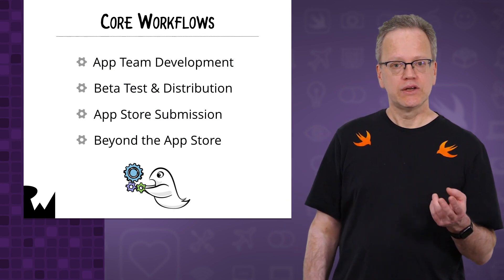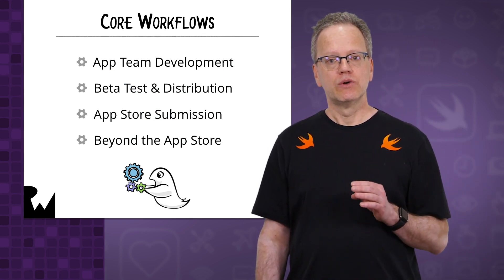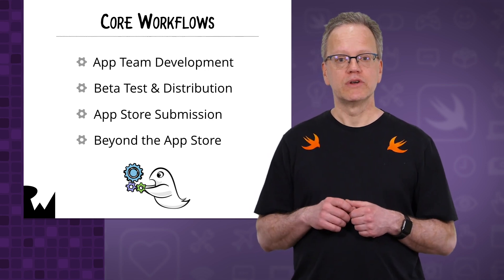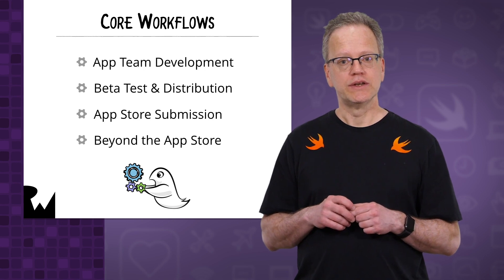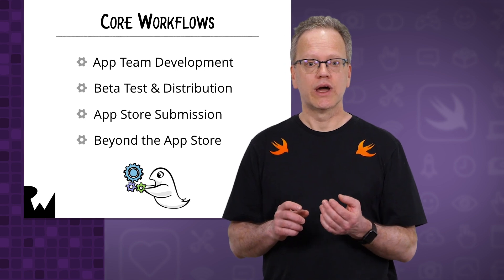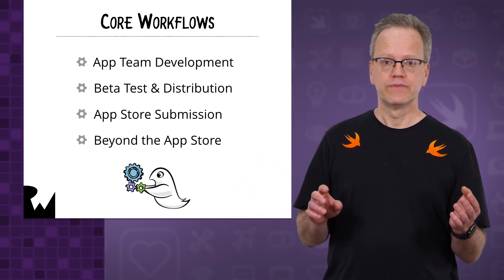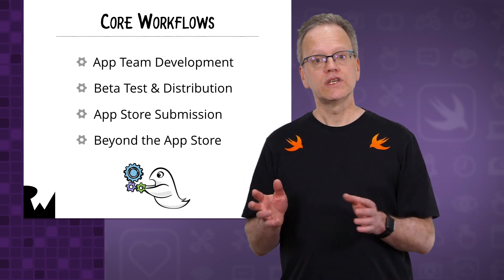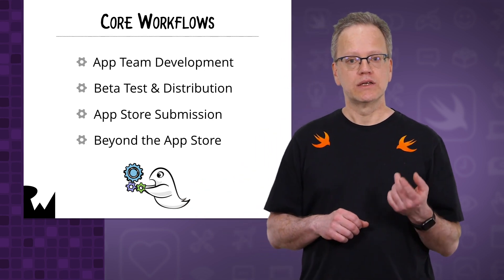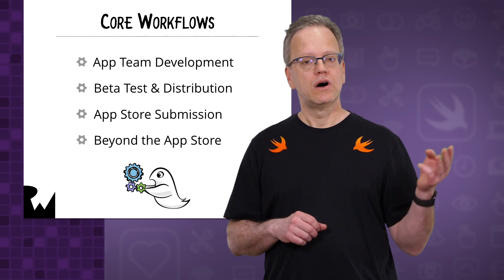We'll begin in Sections 1 and 2 by seeing how Fastlane streamlines the initial iOS app development workflow. Next, in Section 3, we'll focus on improving beta build distribution and testing workflows. Section 4 will focus on civilizing the process of submitting your app and all of its accompanying assets for App Store approval. And finally, in our closing Section 5, we're going to step beyond the App Store ecosystem and learn how Fastlane can add consistency and efficiency to your core team workflows all across the board.